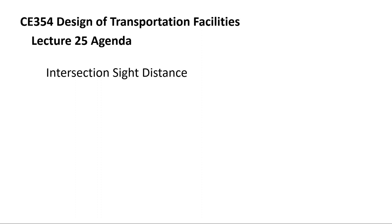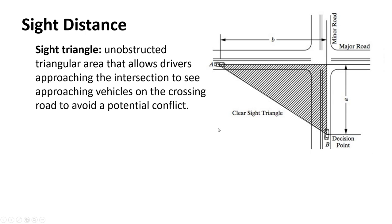At intersections, the last thing we need to check — mostly for safety — is intersection sight distance. At a normal intersection we've got a minor and a major road. In the AASHTO Green Book, there are a number of different scenarios called cases, and they all work on a sight triangle — the unobstructed area you need to see the car on the major road from the car on the minor road. Everything in that cross-hatched area has to be clear of obstructions.